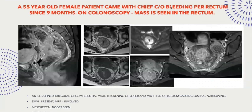A 55-year-old male patient presented with bleeding per rectum since nine months. MRI shows circumferential wall thickening of the upper and mid-third of the rectum causing luminal narrowing. There is involvement of the mesorectal fascia, but there are no significant mesorectal nodes. It is classified as T3B N2A.